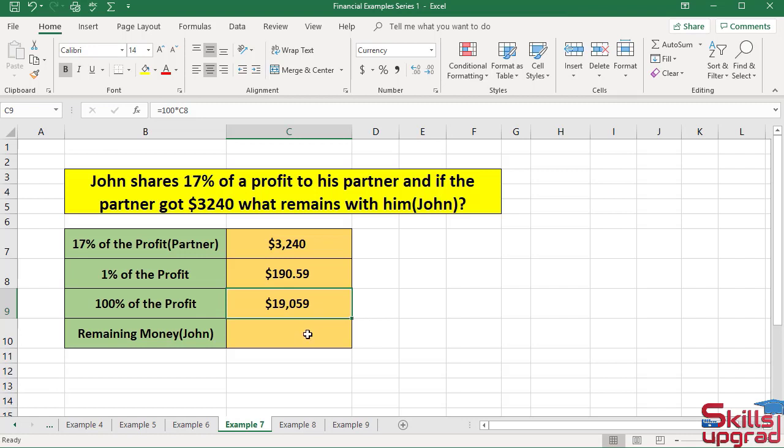Activate cell reference C10, enter equal sign. Subtract the amount of 17% of the profit from the amount of 100% of the profit. Click cell reference C9, enter subtraction operator, click cell reference C7, and press Enter.